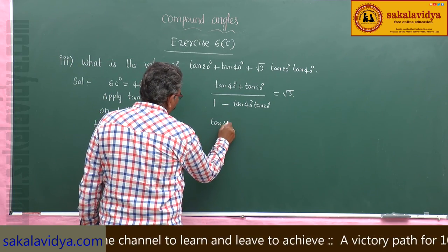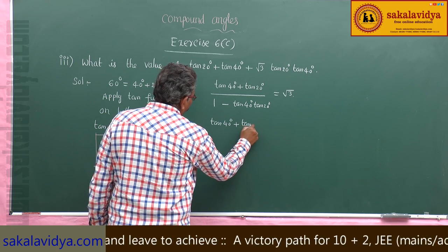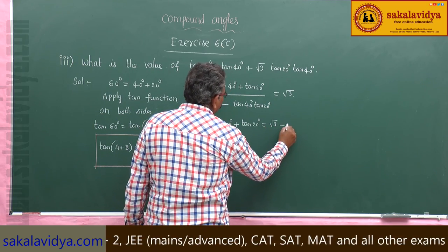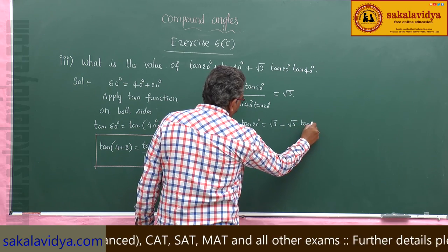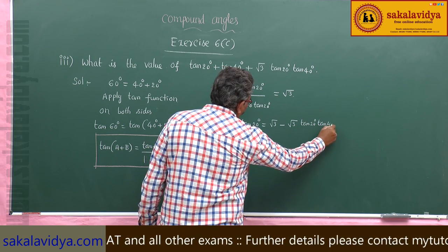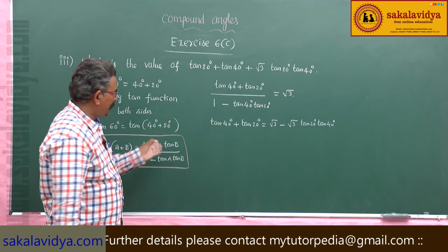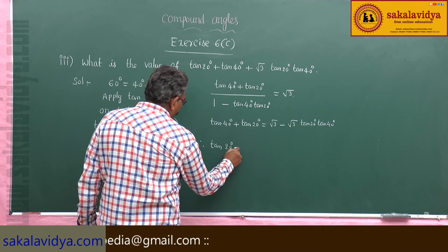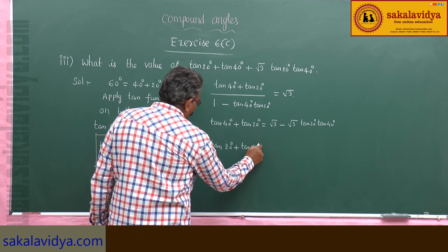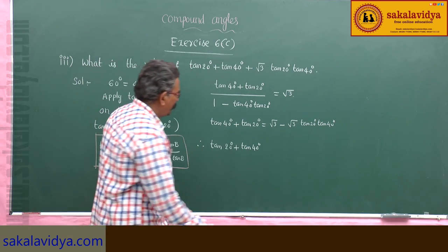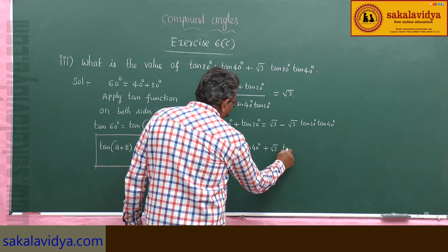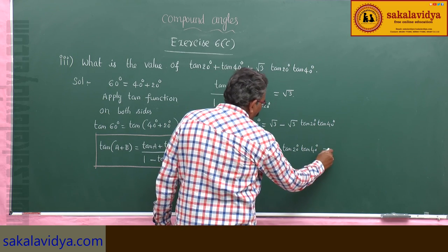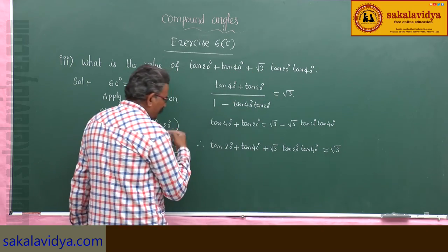tan 40 plus tan 20 equals root 3 into 1 minus root 3 tan 20 tan 40. Bringing the root 3 tan 20 tan 40 to the left side, we get tan 20 plus tan 40 plus root 3 tan 20 tan 40 equals root 3. Therefore the value of the left hand side is root 3.